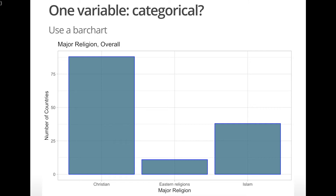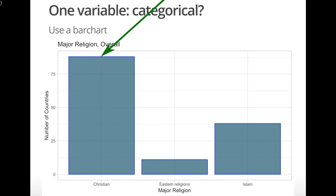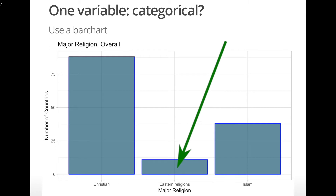From this bar chart, we see that Christianity is the most popular major religion in these 137 countries — in fact, it's the major religion in 88 countries. Eastern religions is the least popular, being the major religion in only 11 countries.